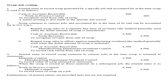For the first case — journal entry to record scrap generated by a specific job, accounted for at the time scrap is sold — the debit side is cash or accounts receivable for $480, and the credit side is work in process control, to recognize the asset from the sale of scrap.